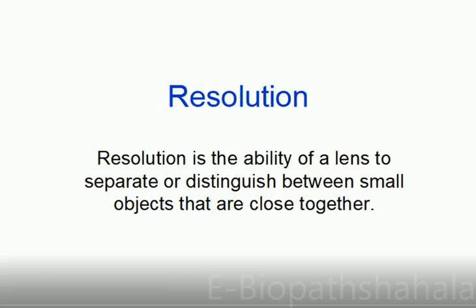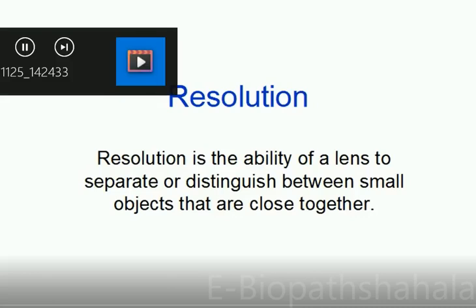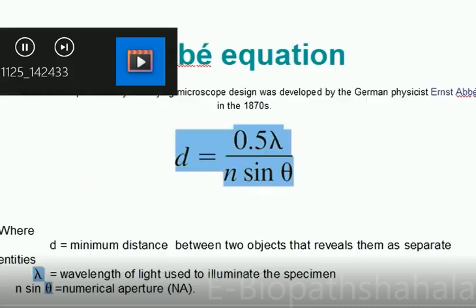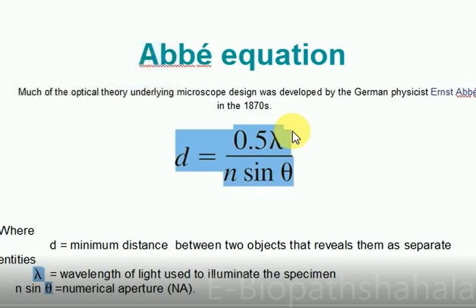Resolution is the ability of a lens to separate or distinguish between small objects that are close together. Much of the optical theory underlying microscope design was developed by the German physicist Ernst Abbe in the 1870s. What is the Abbe equation?